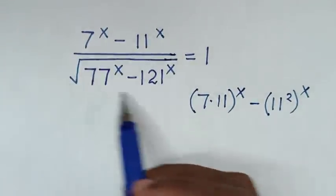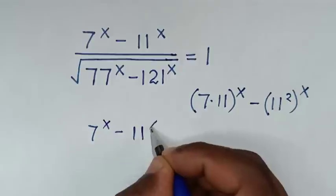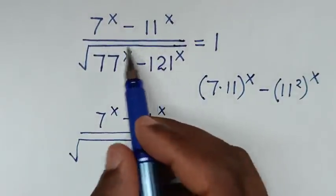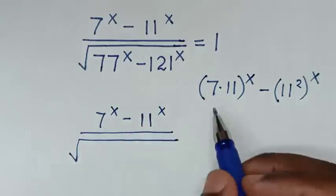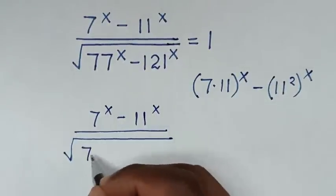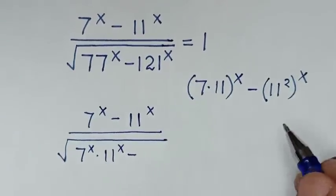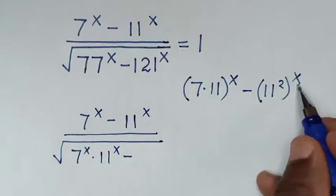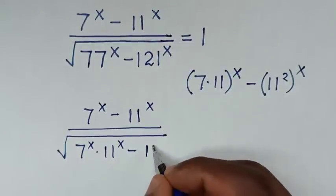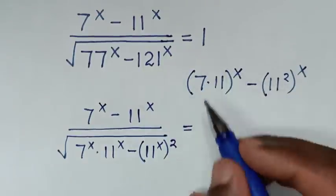From our problem, the numerator is 7^x minus 11^x, over the square root of this denominator. We take x inside the bracket: 77^x becomes 7^x times 11^x, and (11²)^x becomes (11^x)² — taking the power of 2 outside. So the denominator under the square root is (7^x)(11^x) minus (11^x)², all equal to 1.